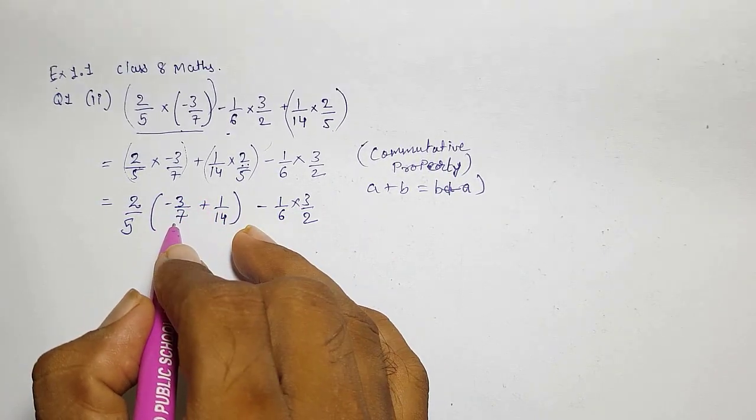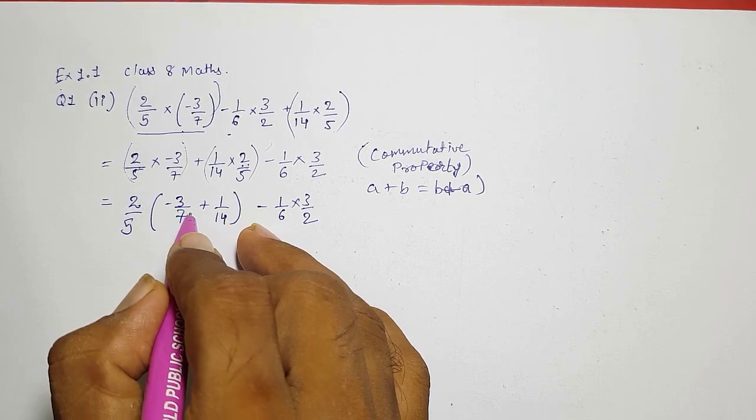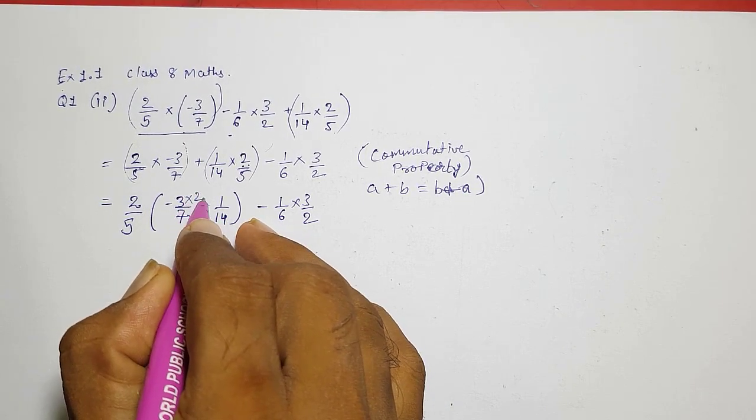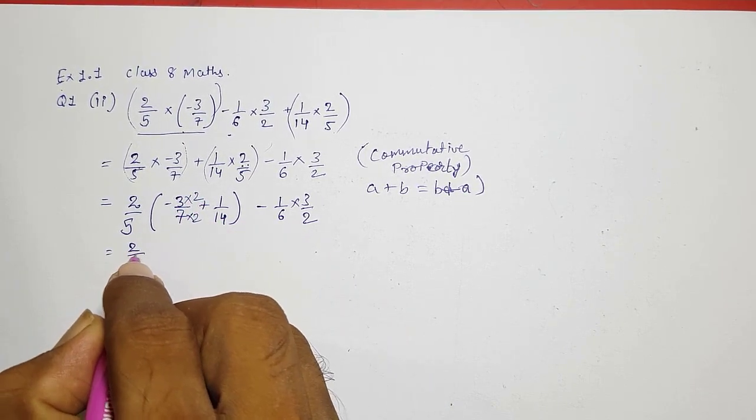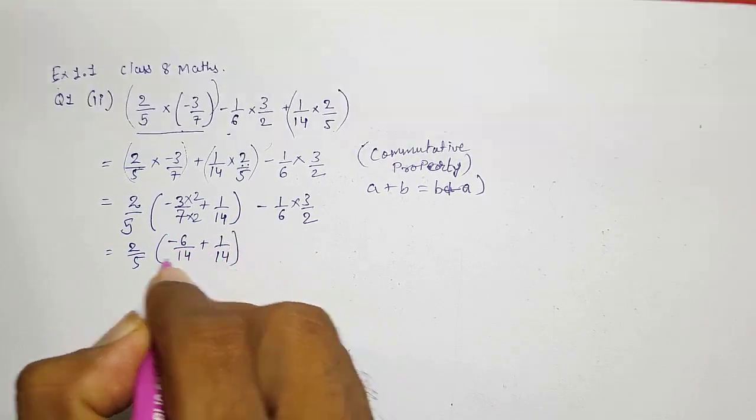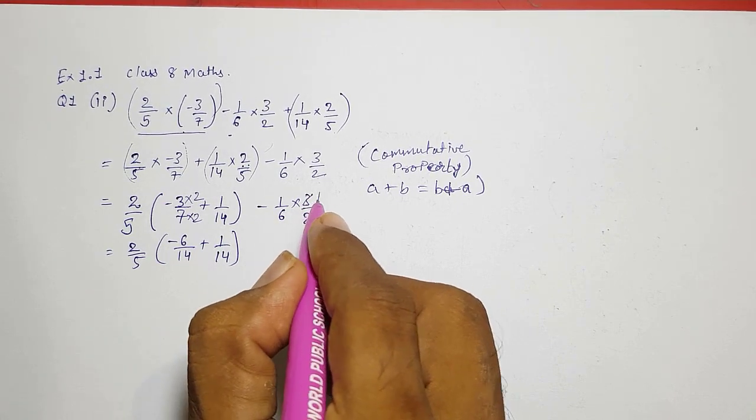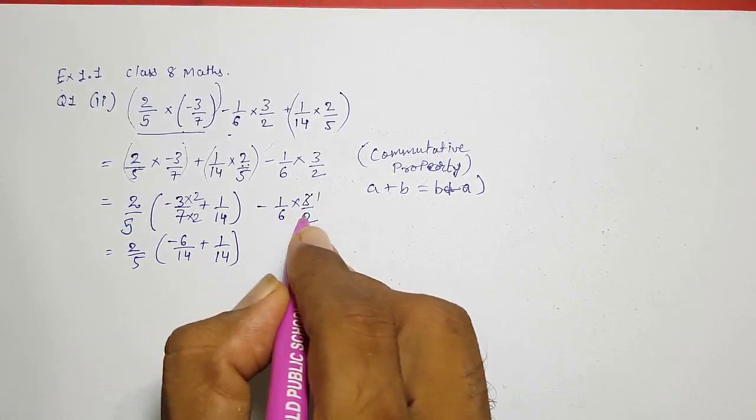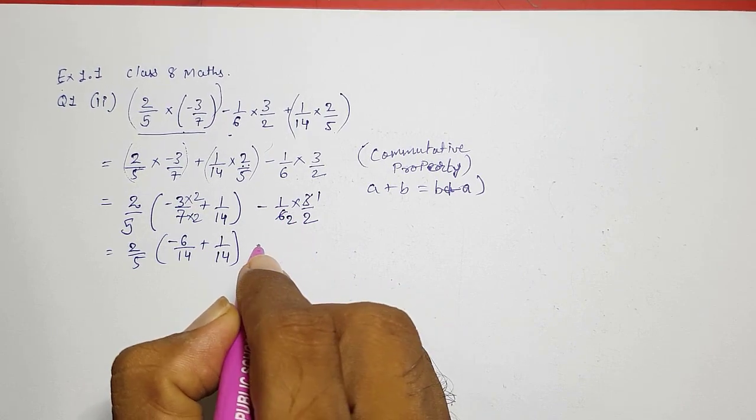So here both these are rational numbers and we need to make the denominator same to add. Into 2 into 2, so 2 by 5 into minus 6 by 14 plus 1 by 14. Now the denominator is same.